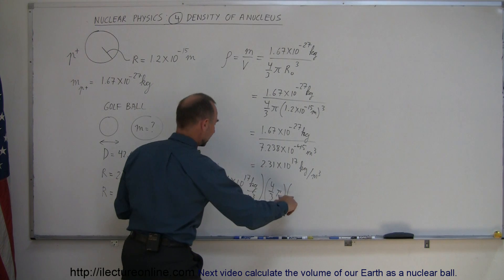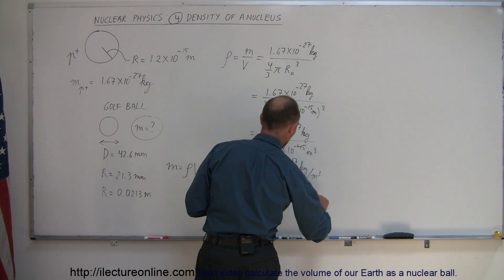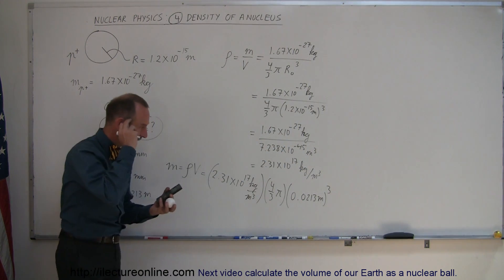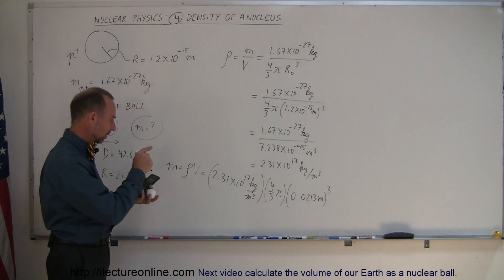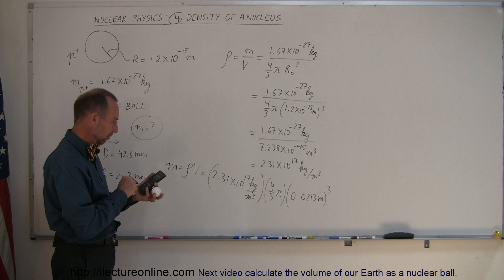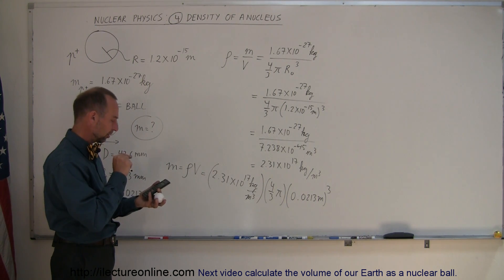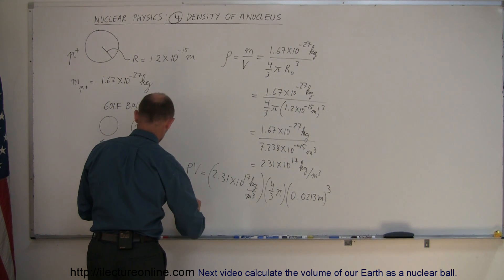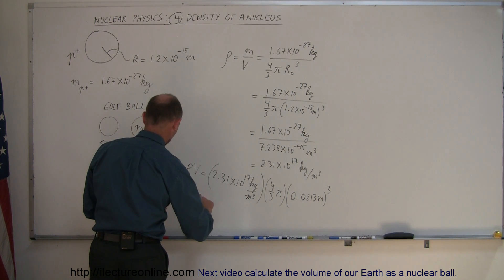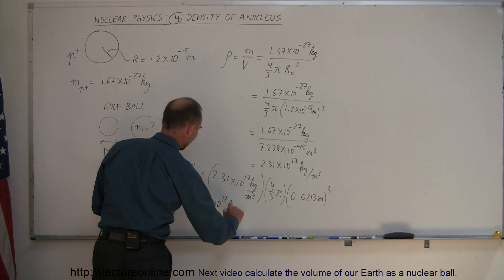I can take this and plug it in here, so that would be 0.0213 meters, and I have to cube that. Let's see what we get. The density times 4 divided by 3 times pi, times 0.0213 raised to the third power equals,